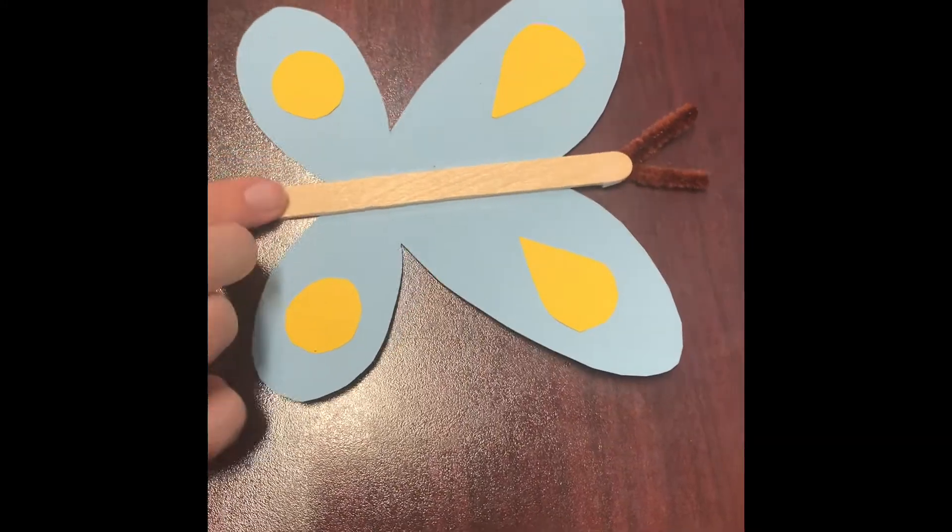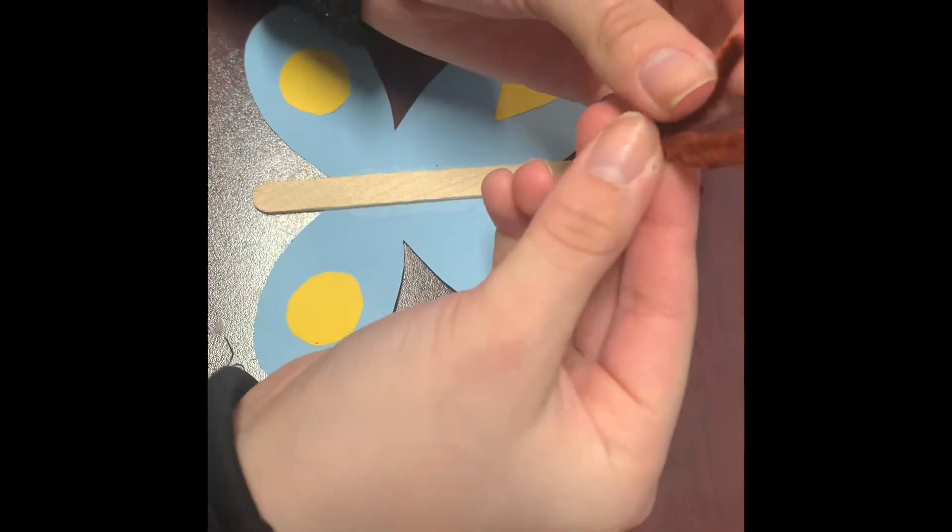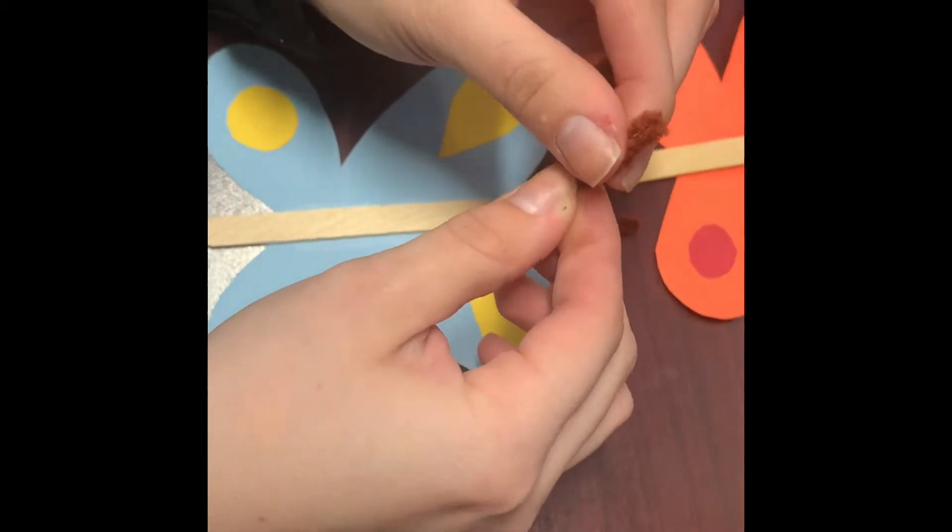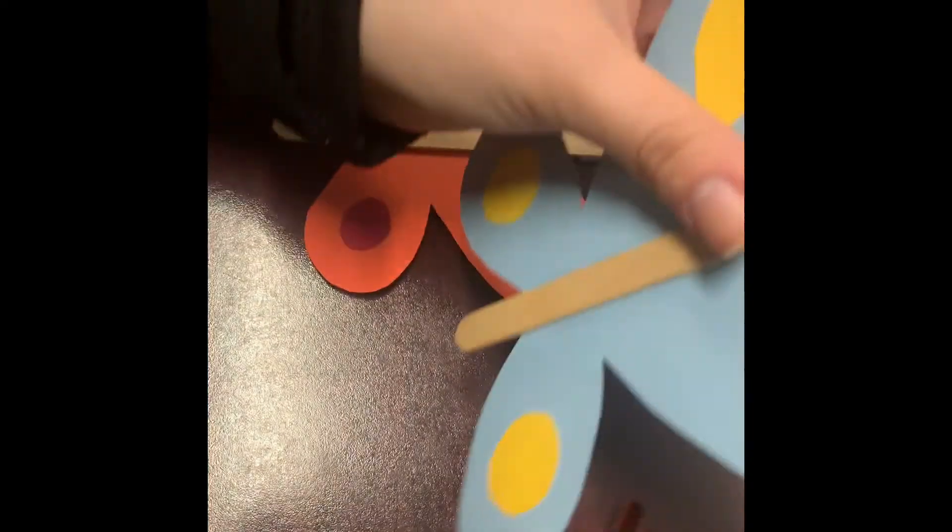So the final result should look like this. For these, at the ends of them, you're going to crisscross them a little bit and then tape it and then tape it with the stick like this. And it should look like this.